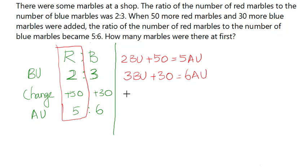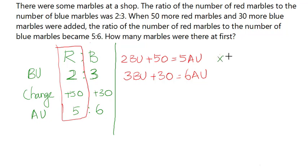Now we need a way to substitute and solve. Since both quantities are changing, we have to write equations and then make either the after units or the before units the same. To make the before units the same, we find the LCM of 2 and 3. So we multiply: times 3 on the first equation, because 3 times 2 gives you 6, and times 2 on the second, giving the LCM of 6.